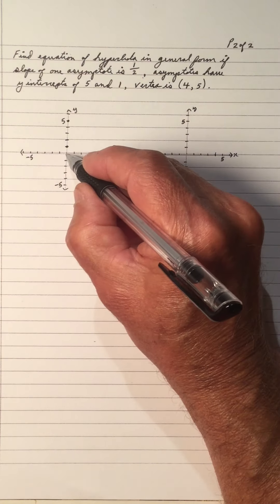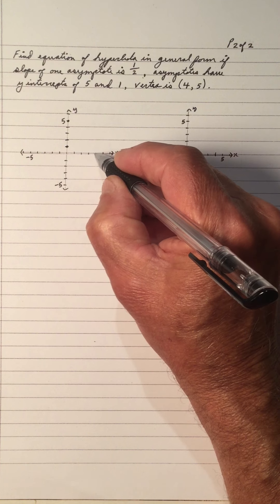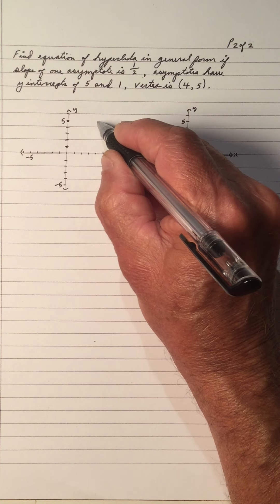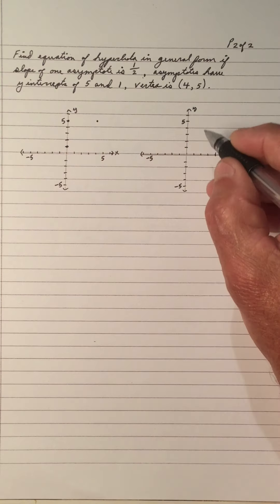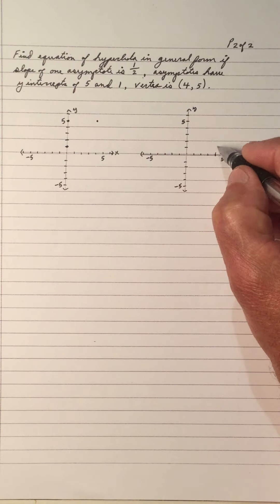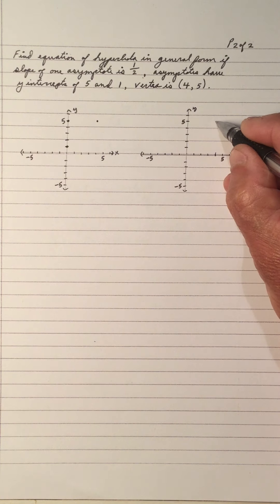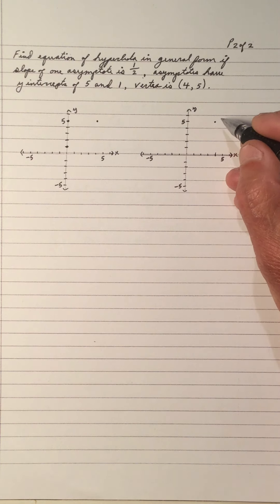I do know the vertex. One of the vertices is (4, 5). So there's the vertex right there at (4, 5). So this is (4, 5).